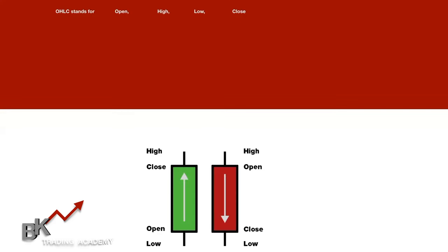As a trader you may see OHLC — that stands for Open, High, Low, and Close. Open is where the candle first began. Close is when price stopped within a specific time frame. High is the highest price reached and Low is the lowest. The close is the final price at which a candle completed before moving on to the next candle.